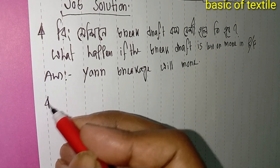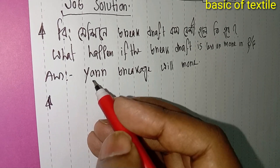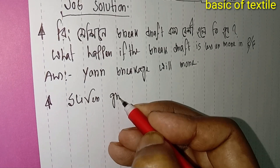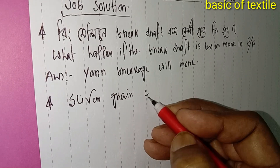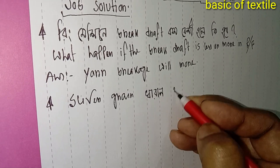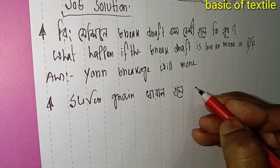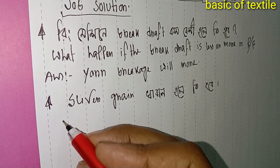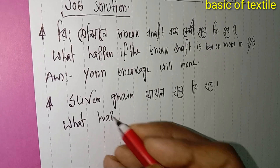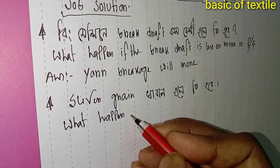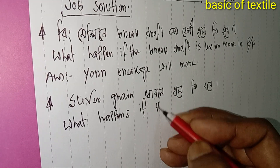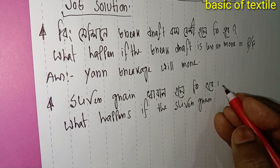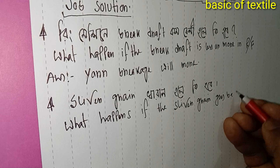Number 2: Sliver grain — coiler. What happens if the sliver grain goes bad? English version: what happens if the sliver grain in the coiler goes bad?